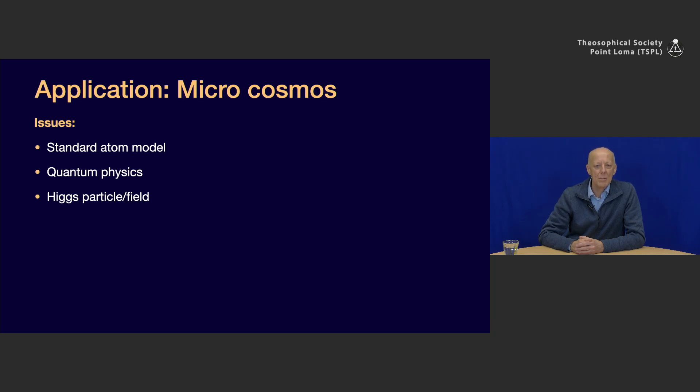First about the standard atom model and the question there is can the atom be split infinitely? So in ever smaller parts. That is a question. Another question is about quantum physics. There are many theories in quantum physics which are all based on probability. But there are no real cause-effect models in quantum physics. We will talk about that later. And the third is about the so-called Higgs field or the Higgs particle theory which is explaining that this Higgs field or Higgs particle gives mass to other particles. Now we will discuss these three issues. And we will start with the atom model theory.